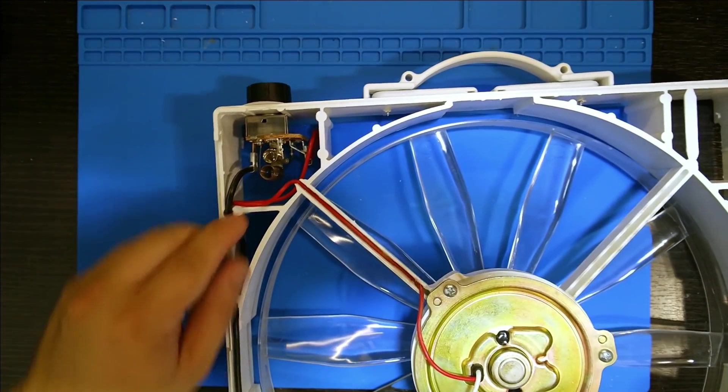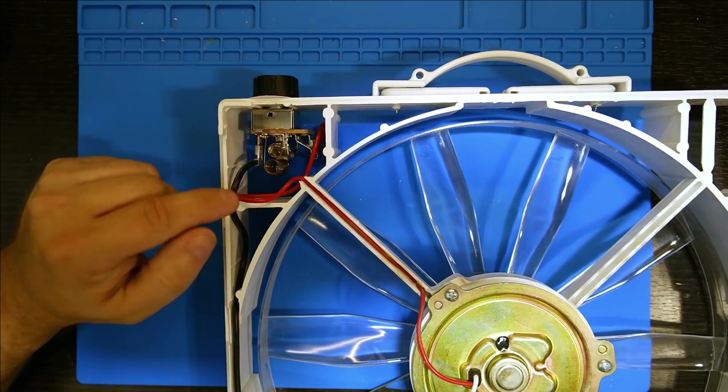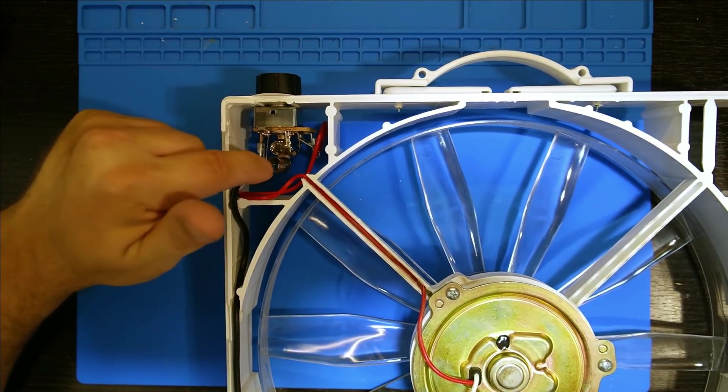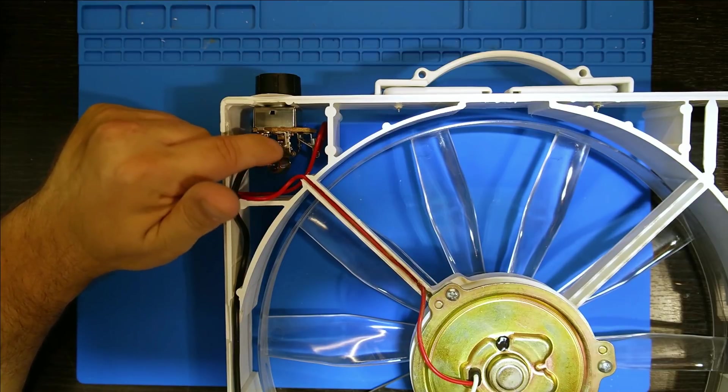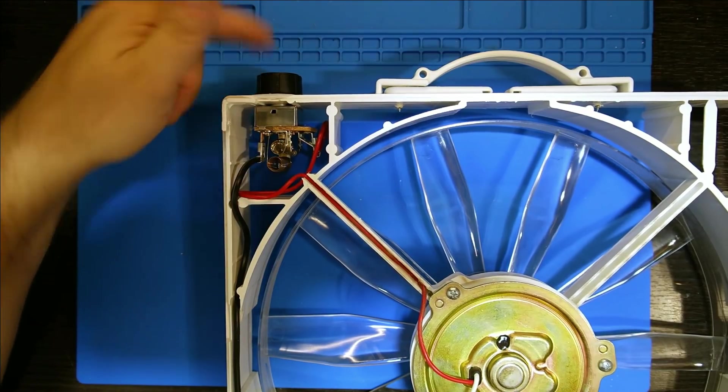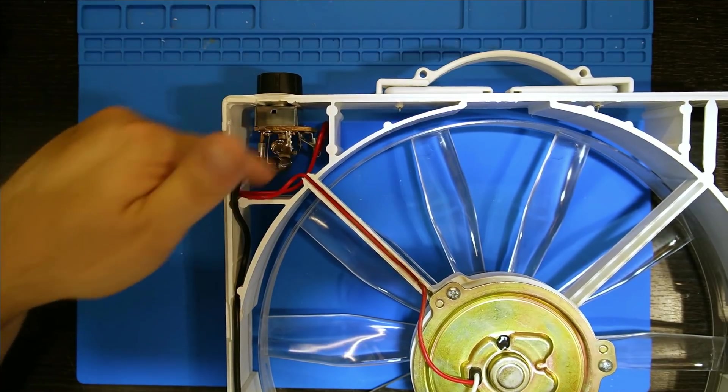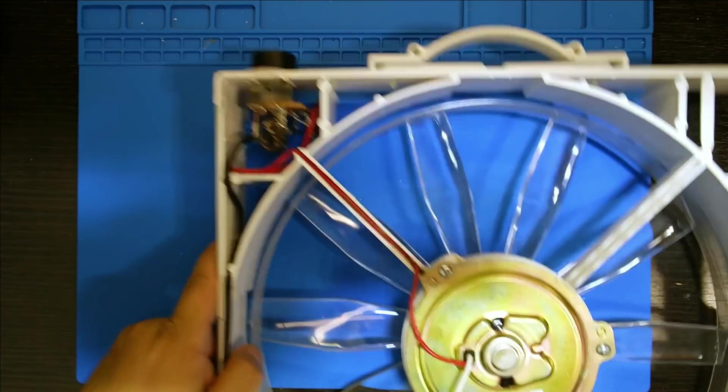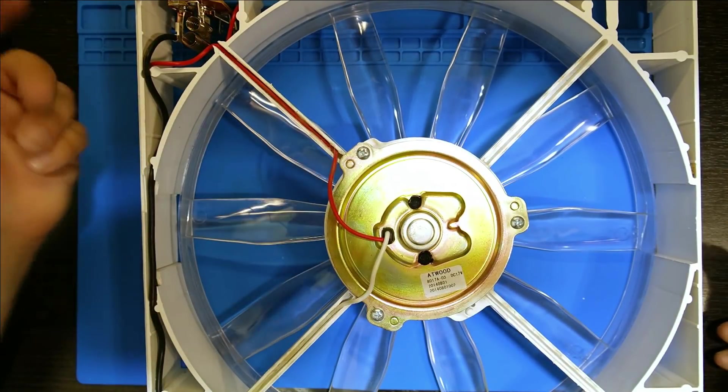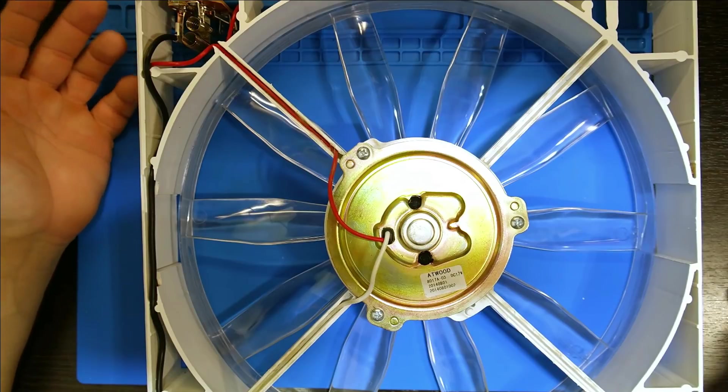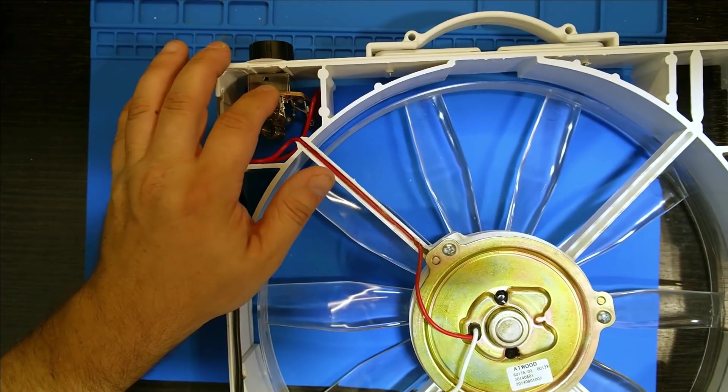It comes on up to the fan control, which is honestly nothing more than low and medium are two different resistor coils, that's all it is. And high is full-on power, and that dumps directly into the fan. It's just a two-wire DC fan with brushes, so this is what we're going to change out today.